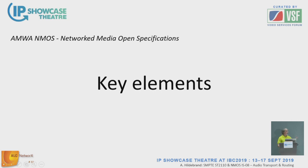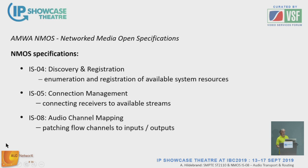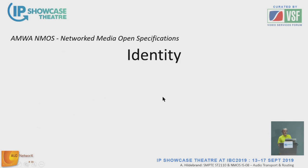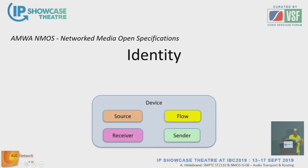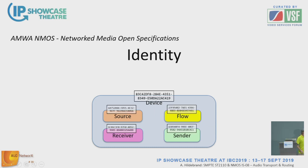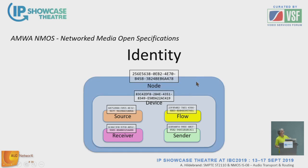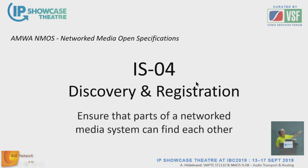Let's understand how NMOS works step by step. First, key elements: identity. In order to know what's on the network, any element in the system can be identified by a unique identifier. Sources, senders, flows, receivers — even devices — all have unique IDs. These are announced into a registry. That's where IS-04 comes into play: the registration and discovery service, which ensures parts of the system know each other and can work together.